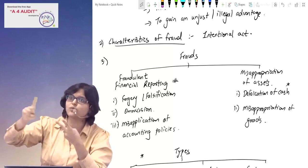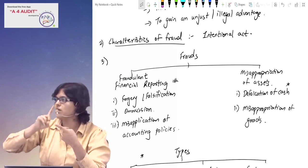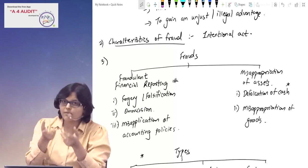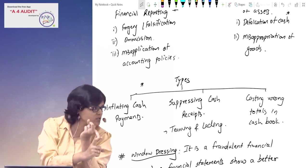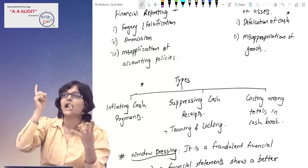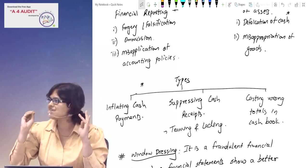If you go to misappropriation of assets, two points: misappropriation of goods and misappropriation of cash. Misappropriation of cash has three points: inflating cash payments, suppressing cash receipts, and casting wrong totals in cash book.